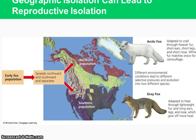Here's an example of reproductive isolation. Usually what happens is, first the geography is interfered with, and then after that they can no longer mate and have fertile offspring. An example is the Arctic fox and gray fox — they had a common ancestor. White fur allows the Arctic fox to camouflage with the snow better, making it more favorable up in the Arctic. The gray fox adapted to heat through lightweight fur and long ears — ear size is an adaptation that helps with maintaining body temperature.